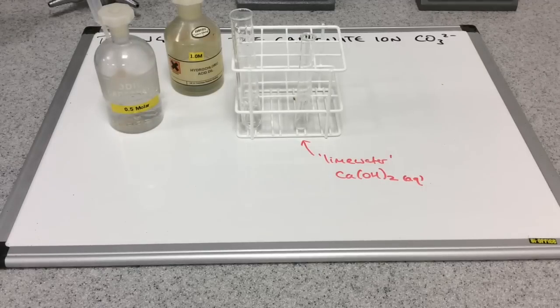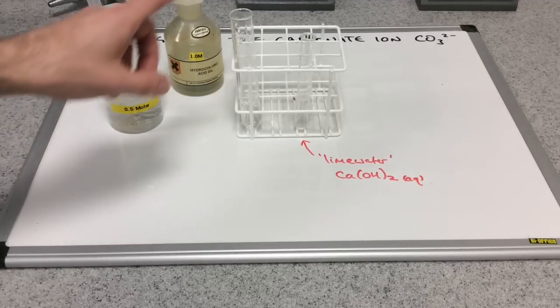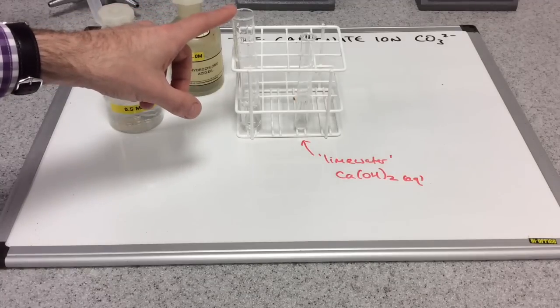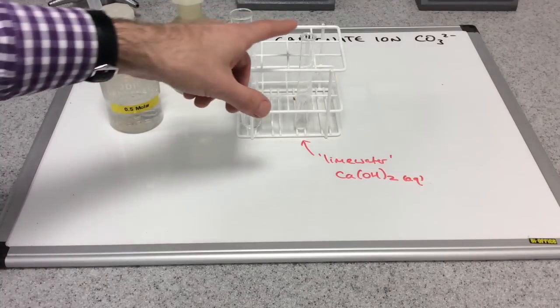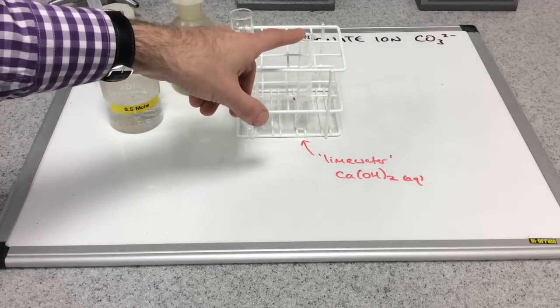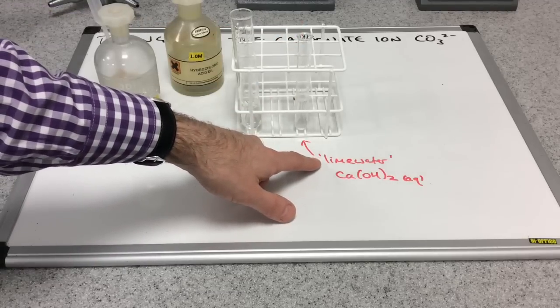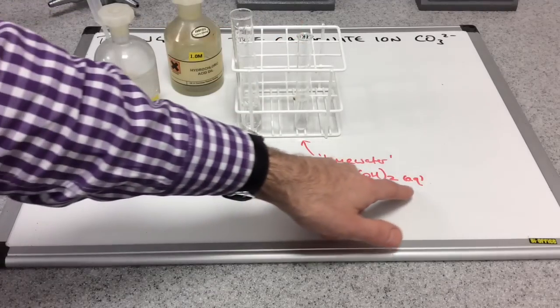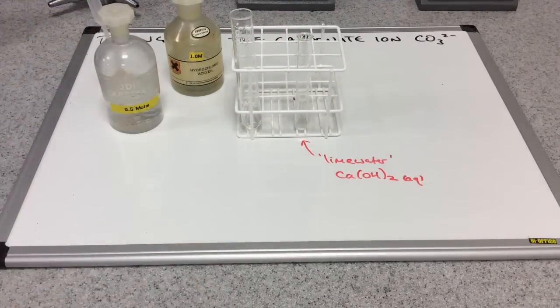I'm going to repeat the experiment now. But this time I'm going to send the gas that's produced, the carbon dioxide, from here into this smaller test tube here, which you can see I've written up contains lime water, which is the chemical aqueous calcium hydroxide.